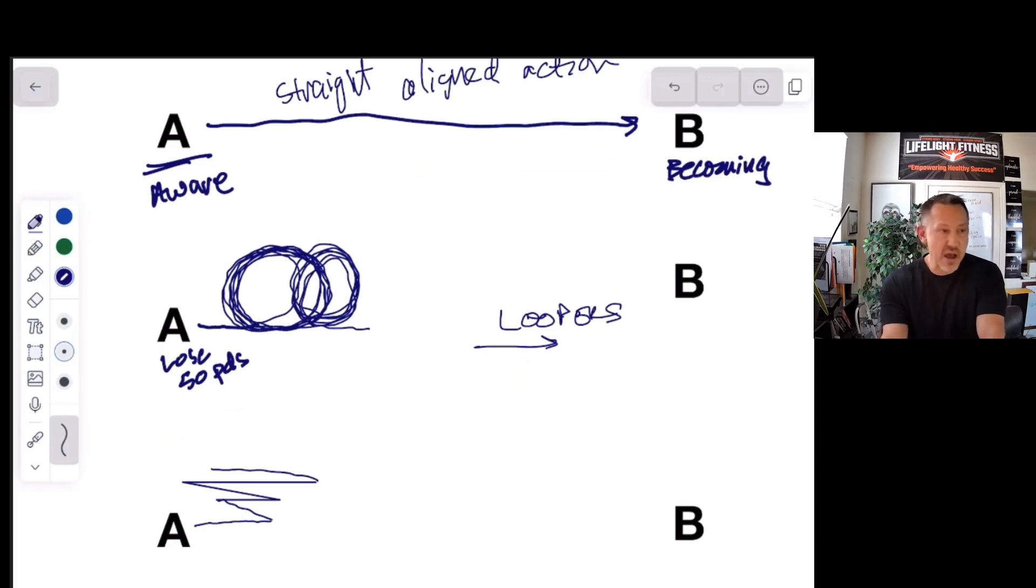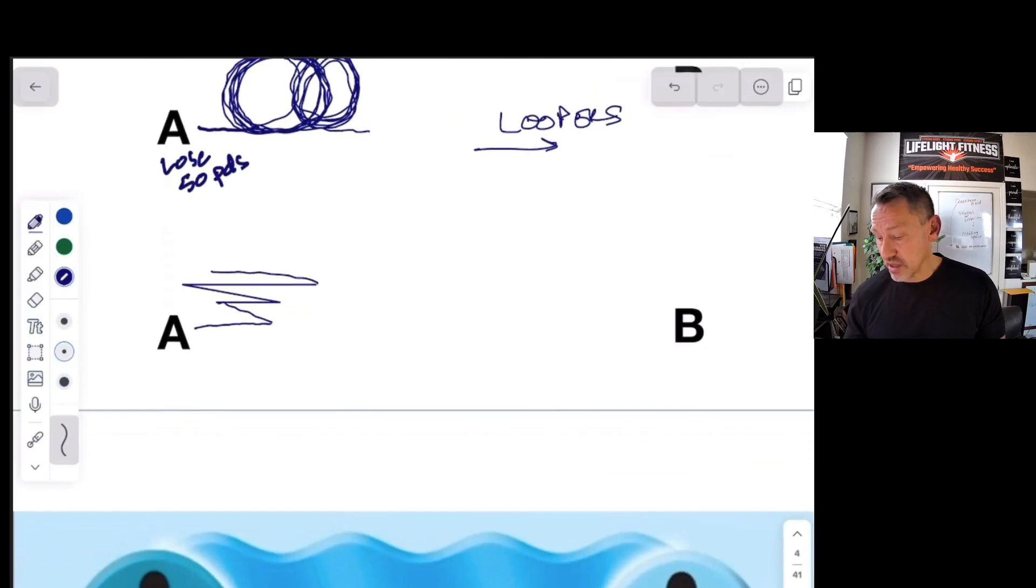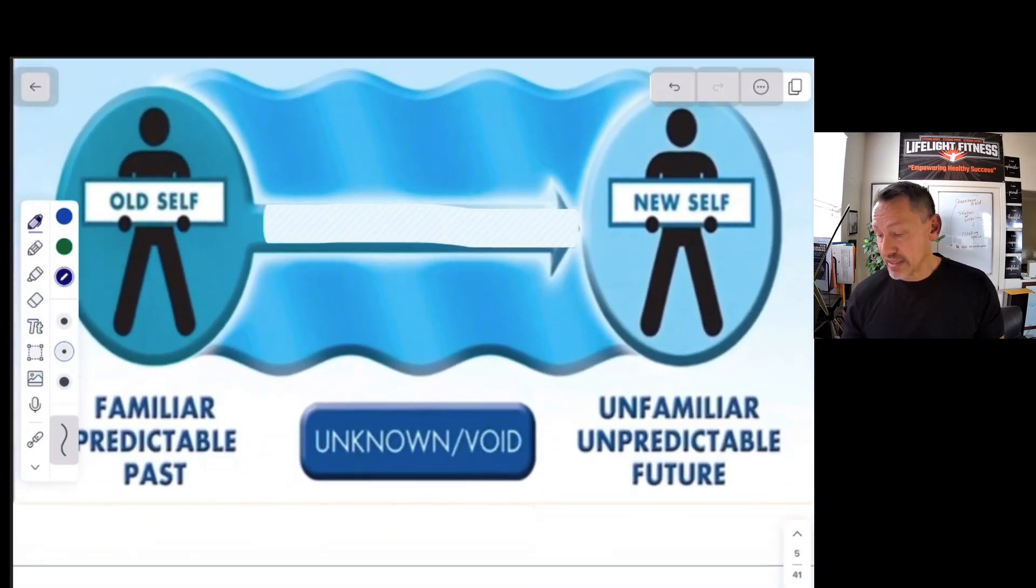I'm asking you from now on to ask yourself at any point in life, whatever you're doing, ask yourself: Am I straight lining? Am I aligned? Straight line alignment going towards what I want? Am I looping? Am I zigzagging? That awareness will open up new possibilities for you.